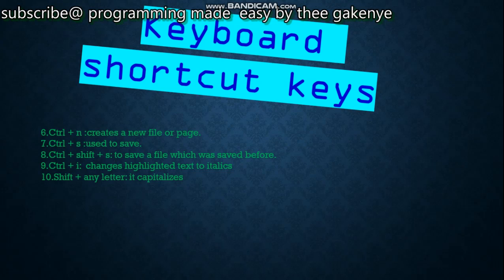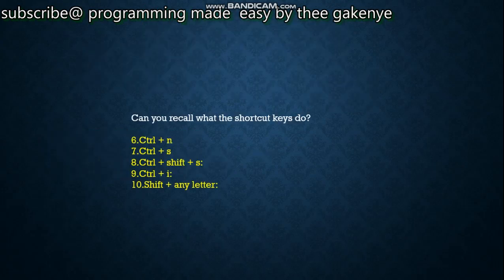Number nine continued: Ctrl+Shift+S saves a file that has been saved before. Number ten: Ctrl+I — changes highlighted text to italics. Number eleven: Shift plus any letter — for example, pressing Shift and any letter between A to Z will capitalize that letter. The answers: Ctrl+N is a new file, Ctrl+S is save, Ctrl+Shift+S is save a saved file, Ctrl+I puts highlighted text in italics, and Shift plus any letter capitalizes the pressed letter.